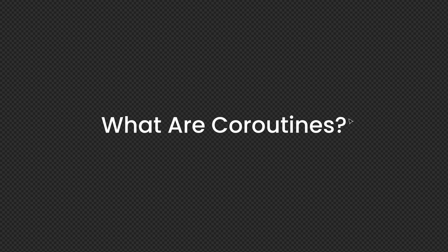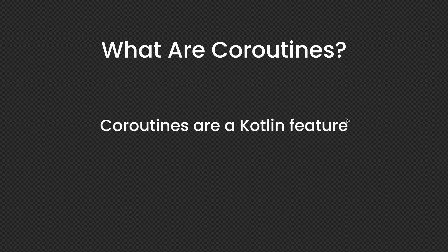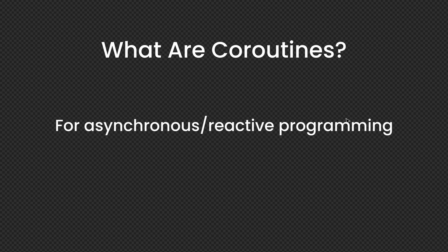So first of all, what are coroutines? Coroutines are a Kotlin feature — they come from the Kotlin language, not from the Android framework or Java. They are a Kotlin feature for asynchronous programming, which means executing tasks or pieces of code without affecting our main thread. They make it easy to perform long-running tasks like loading a database or calling an API, or complex calculations that take too long.